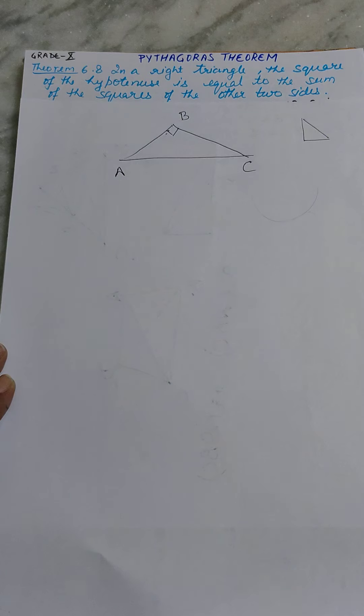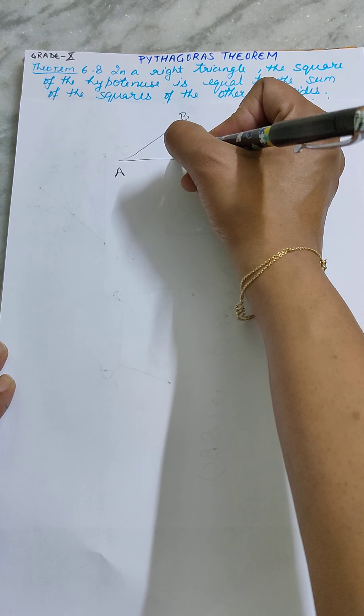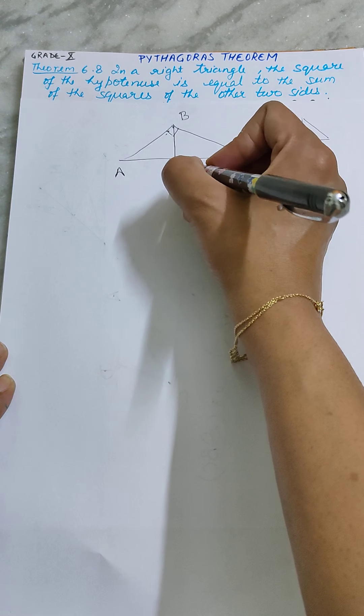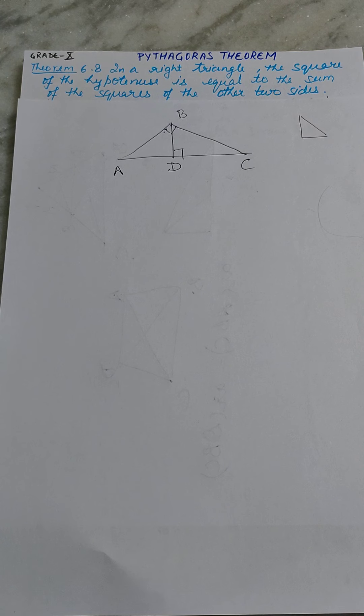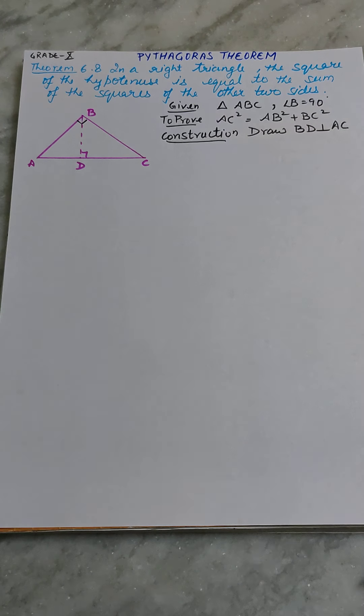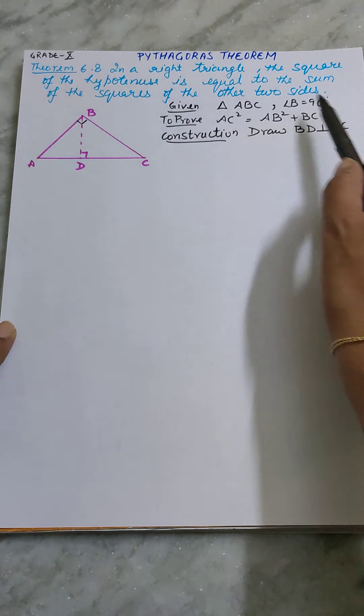Angle B is my 90 degree. And then there would be a construction from B-point and we will draw perpendicular. Whenever you are getting theorem in the paper to prove, you have to always mention given, to prove, and then construction.